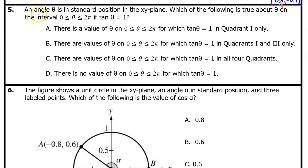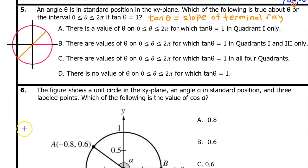Number 5. An angle θ is in standard position in the xy plane. Which of the following is true about θ on the interval from 0 to 2π if tan θ equals 1? We have learned that the tangent of θ is equal to the slope of the terminal ray. If the tangent of θ is equal to 1, that means the slope of the terminal ray has to be 1, like this.